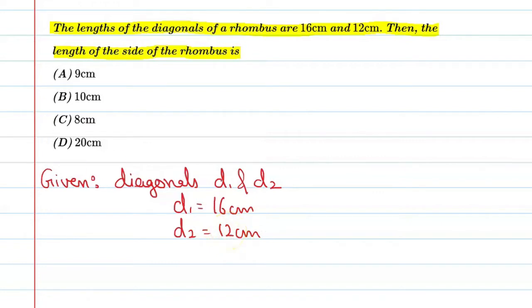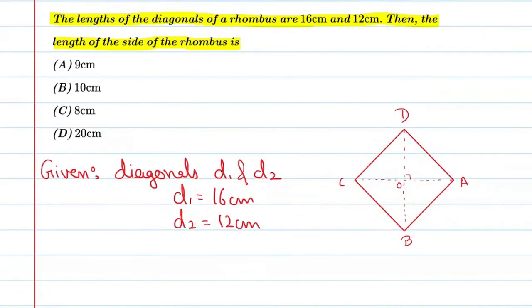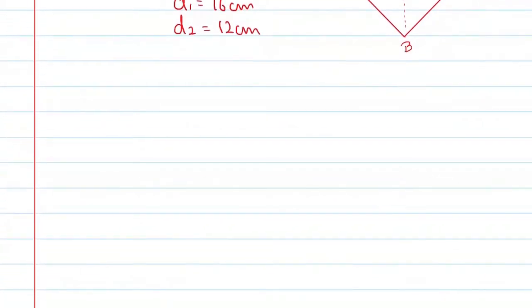Let's see it in the figure. This is our rhombus ABCD. Diagonal number one is BD and diagonal number two is AC.